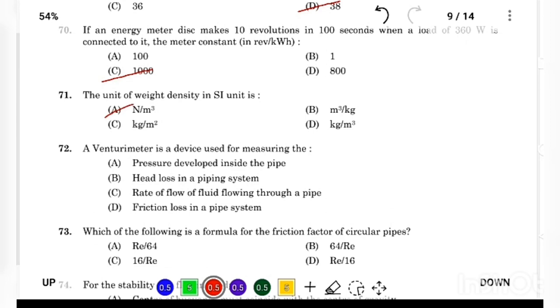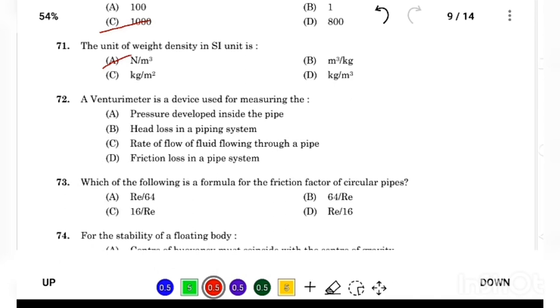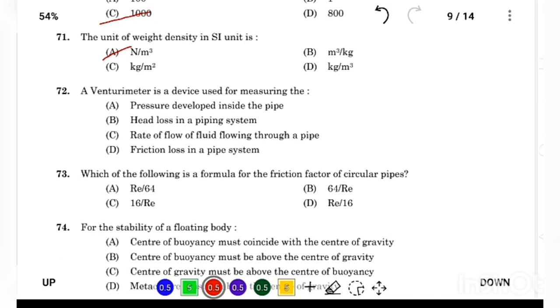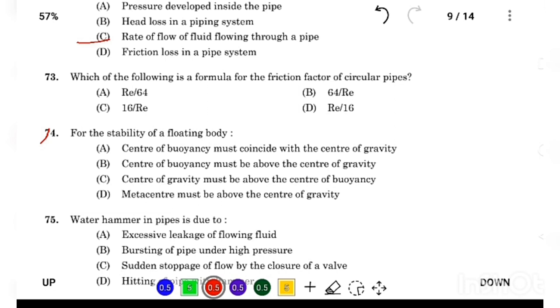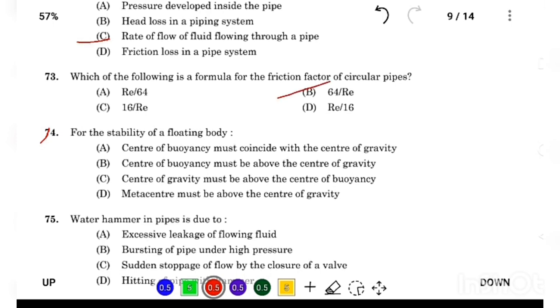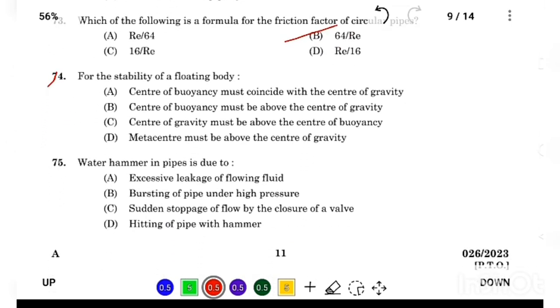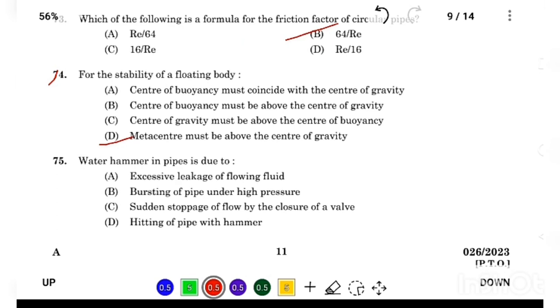The venturimeter is a device used for measuring the Answer Option C, rate of flow of fluid flowing through a pipe. Which of the following is a formula for the friction factor of a circular pipe? Answer Option B, 64 by RE. For the stability of floating body, Answer Option D, metacenter must be above the center of gravity.